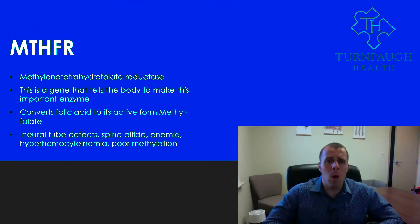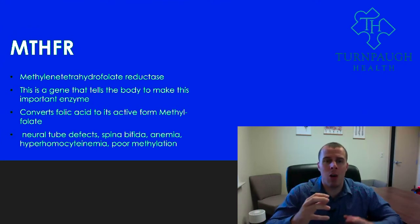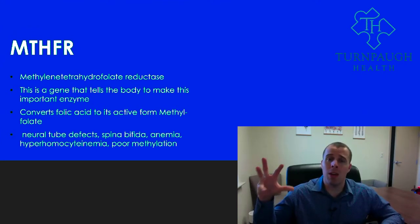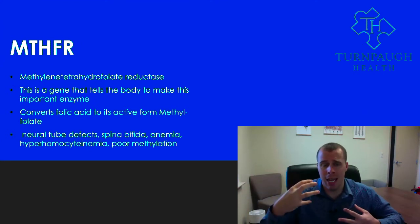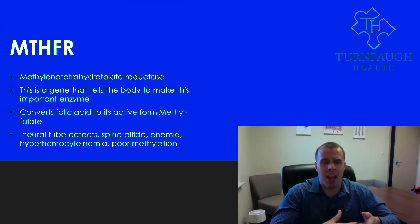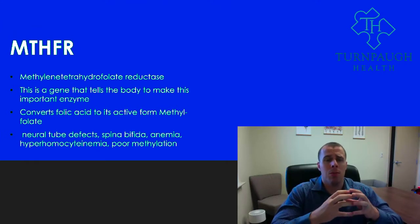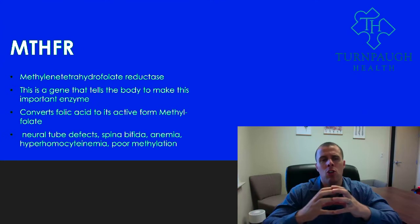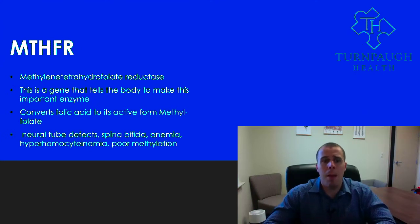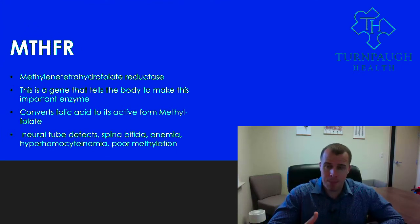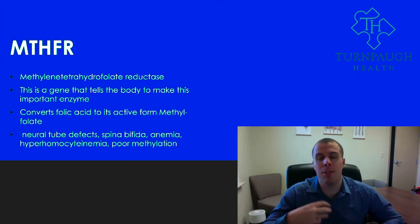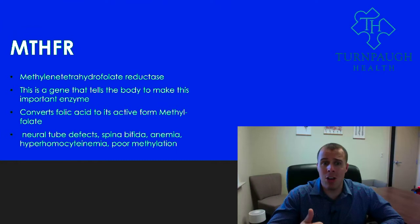What methyl tetrahydrofolate reductase does is it helps to break down folic acid. In our environment we get folic acid, we take it in, and we then have this enzyme — activated by a gene — that helps us break down folate or folic acid into its reduced form, methylfolate. This is so important because in pregnancy we can see neural tube defects develop due to poor methylation and low B vitamins, specifically folate.